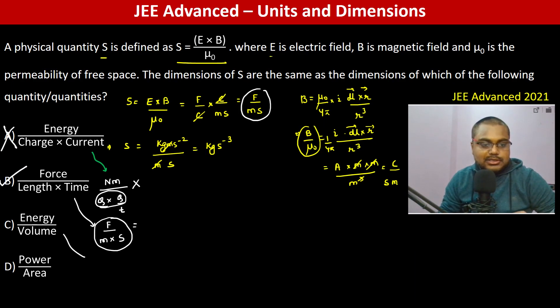C: energy by volume. Energy is joule, so newton meter, so kg·m·s⁻² into m divided by meter cube. One meter is remaining, but ideally it should be kg per second cube. Therefore C is also not the answer.